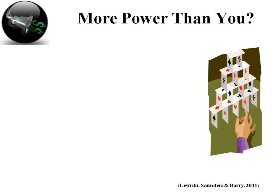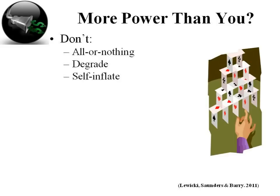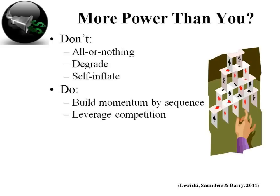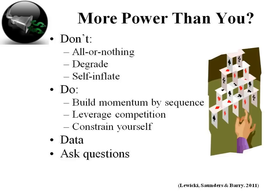When the other party has more power, here's the don't list. Never do an all-or-nothing deal. Don't degrade the other party — if you make someone feel smaller or insult them, you're going to put a wall up. Don't over-inflate your value either, because that will also create barriers. Do build momentum by doing deals in sequence, working through piece by piece. Use the power of competition to leverage some power, but constrain yourself and don't take advantage of the other party. Good information is always a source of power — ask more questions. The more information you can gain, the more power you'll have, and you have to manage the process.